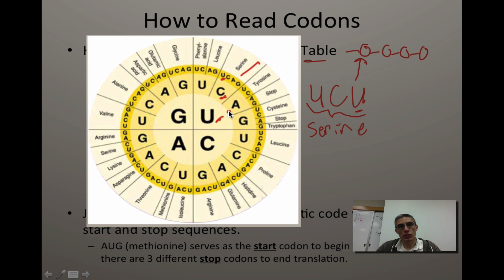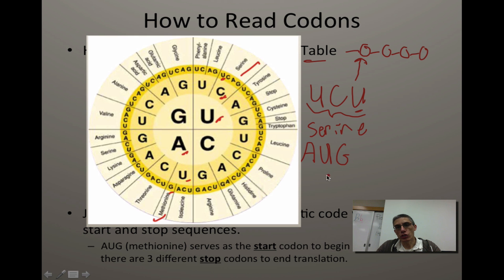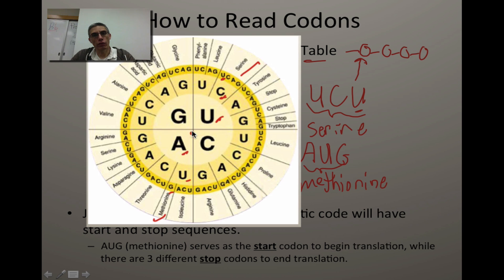Looking at the table, there are some amino acids where you can only produce them using one sequence. For example, there's one called methionine — that one's going to be important in just a second. If you start in the middle with A, make your way down to the second letter U, and then we only have a G, so AUG is going to code for methionine. There is no other way to actually get that amino acid. There's a variety of ways to code for various amino acids — some of them have more ways than others.